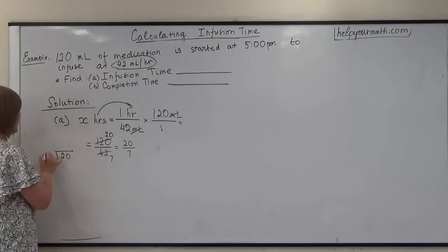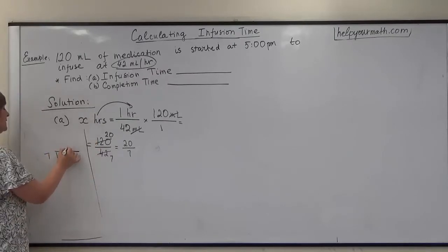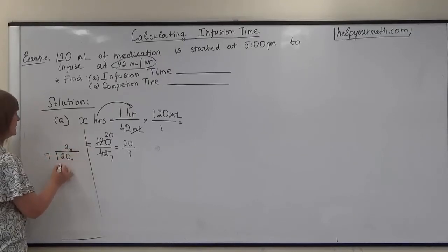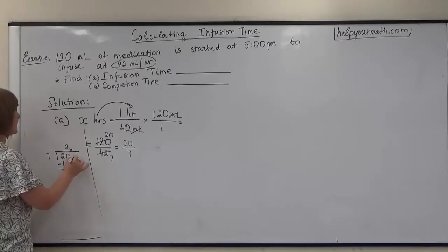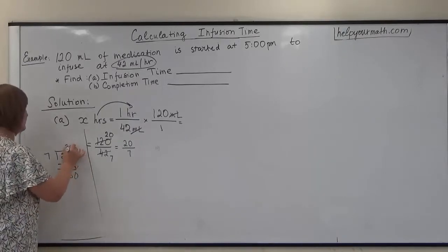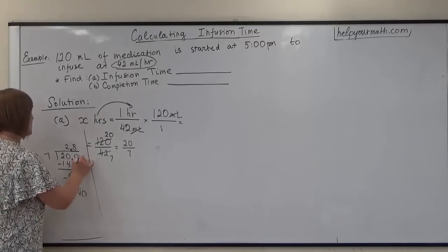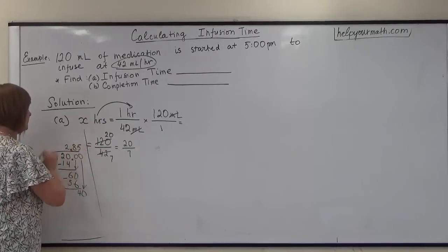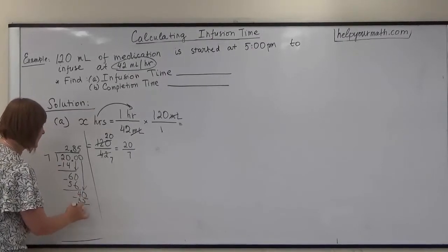20 divided by 7. Let's drop the decimal point at the end of 20. We will fit 2 times 7 here. 2 times 7 is 14, minus 14. 20 minus 14 is 6. We need to add extra 0, so 60. We can fit 8 times. 7 times 8 is 56. Minus, so we have 40 right now. We need to bring extra 0 and we can fit now 5 times. 5 times 7 is 35. Subtract that, we have 5.